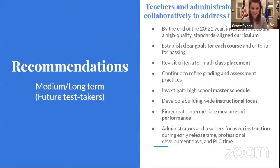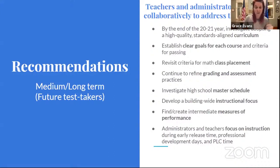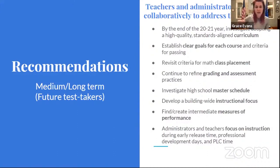For the medium to long term, one thing we want to think about is investigating adopting a high-quality, standards-aligned curriculum by the end of this school year. With scores of this type, we have a lot of room to grow, and we really need to improve the core of our instruction — starting with what math we're teaching in those courses. We'd also like to establish clear goals for each course and criteria for passing. We're seeing that kids have really different experiences at Sanborn based on the different tracks they're following.